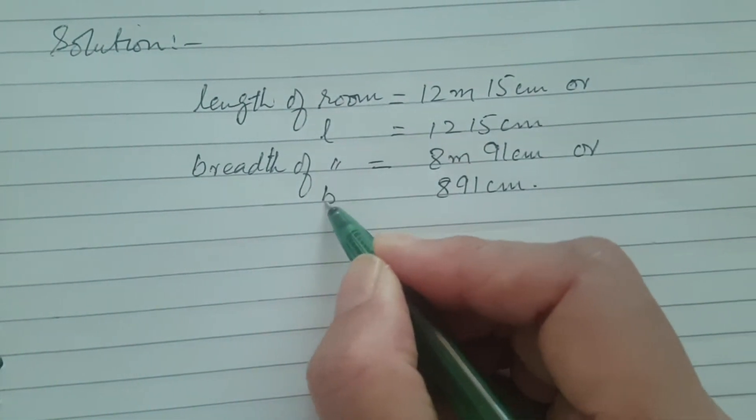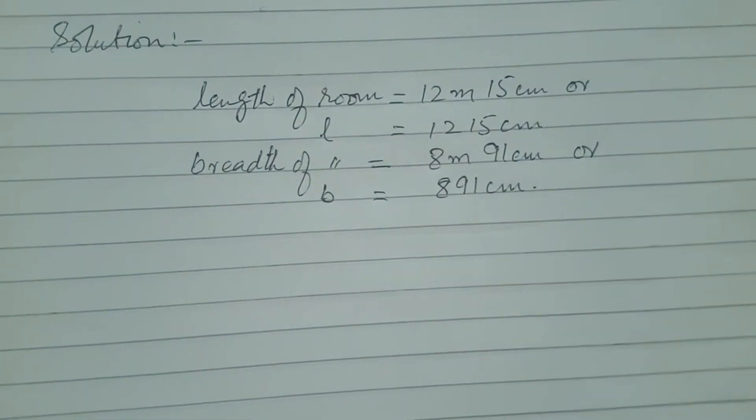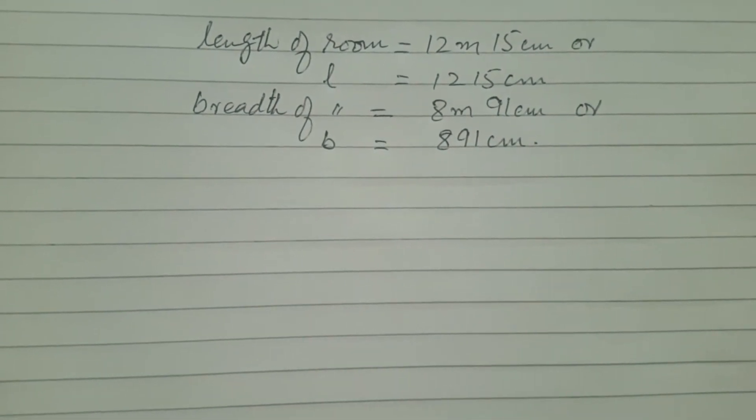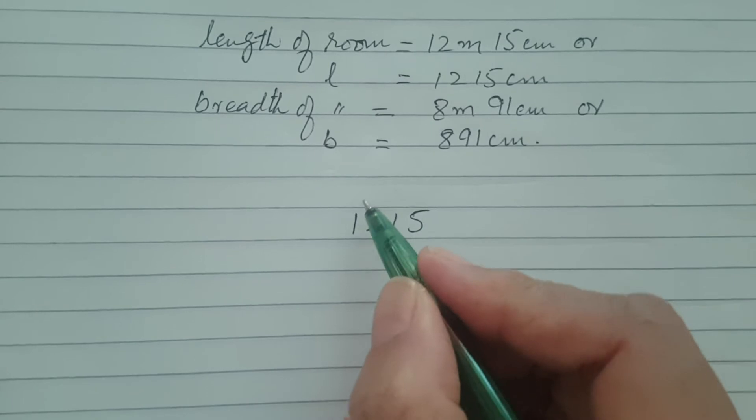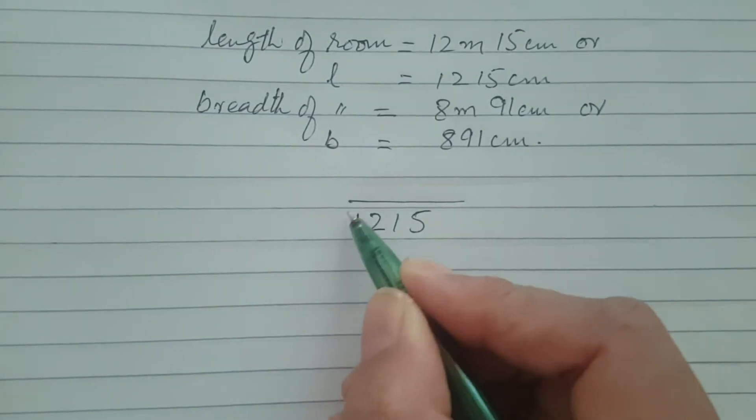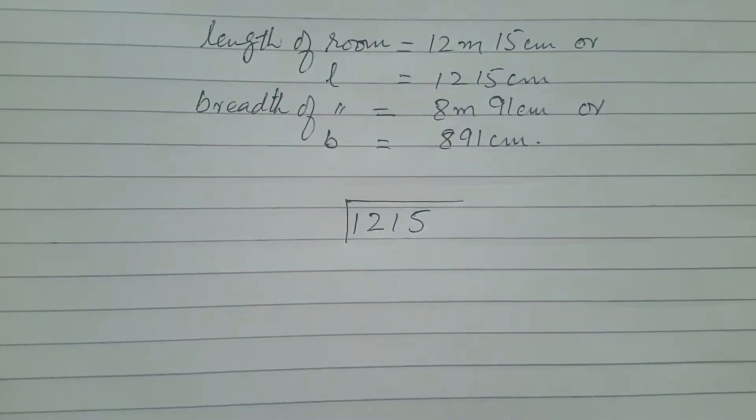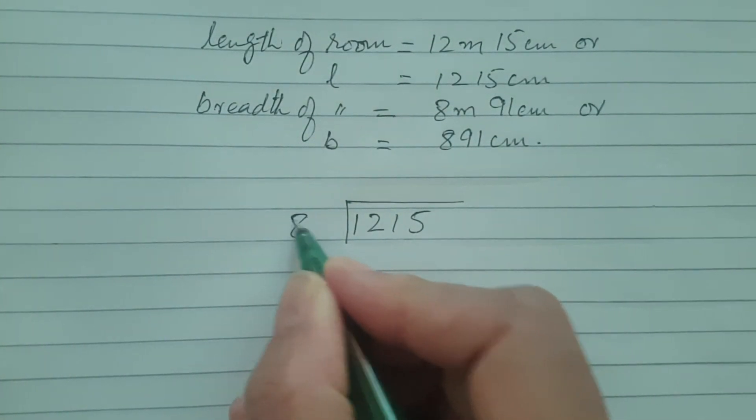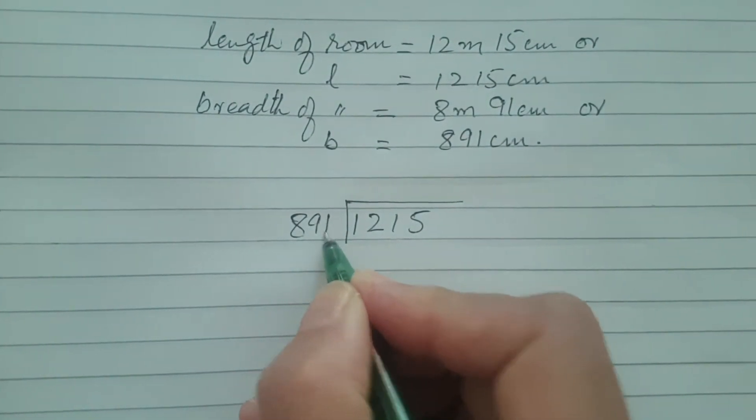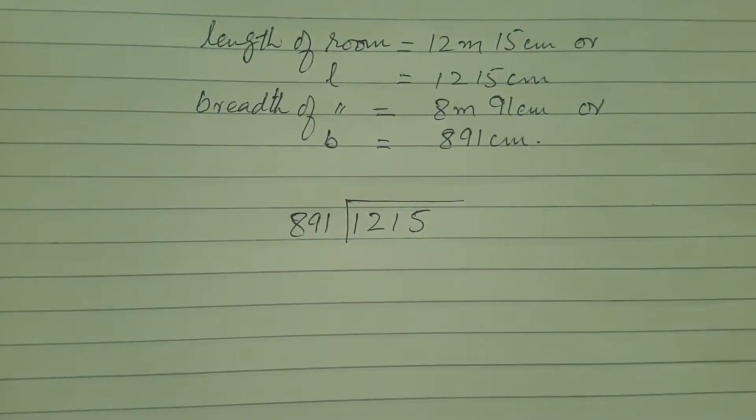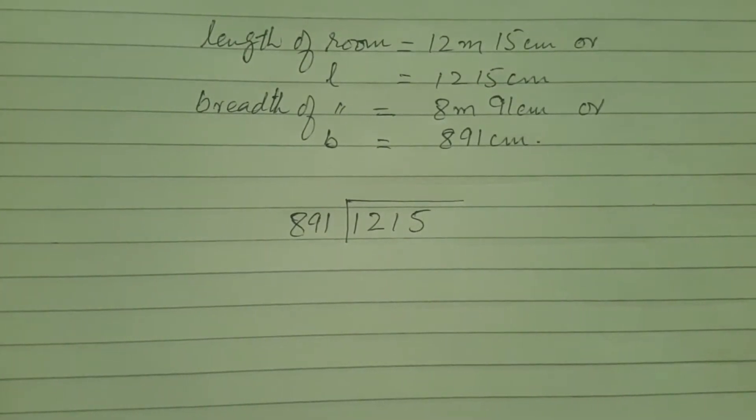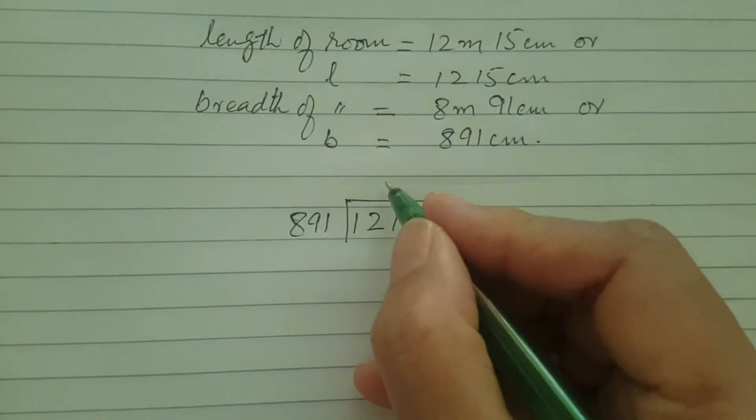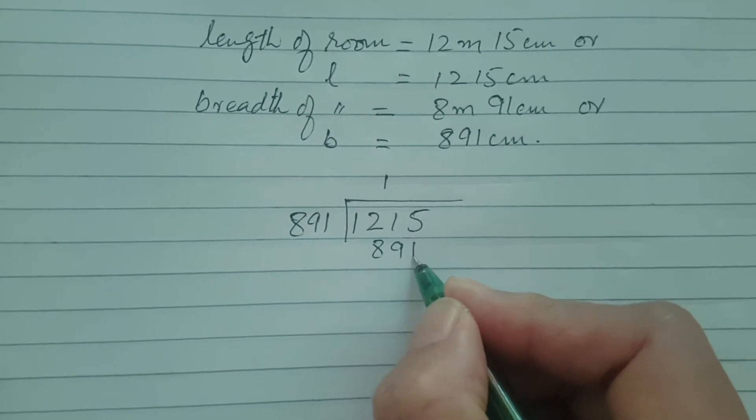This is length and this is breadth of the room. Now the greater unit is length, so make your dividend. Find out the GCD to find out the length of the greatest tile which can be used for the paving in the whole room. So the tiles should be of that length. We will do the division and get the GCD or highest common factor of these two quantities.